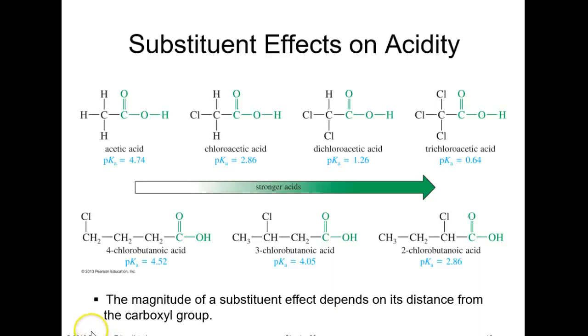All right, substituent effects on acidity. We've talked about this a little bit, but it's saying what happens if you start substituting your hydrogens. If you just have regular acetic acid, we'll have a benchmark pKa of 4.7 or 4.